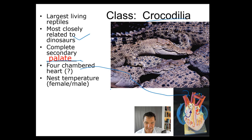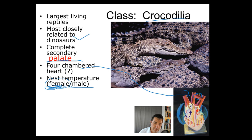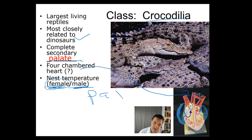Crocodiles also have temperature-dependent sex, very much like the lizards. When you have higher temperatures, you get males. Low temperatures will give you females, higher temperature gives you males. So they're like pattern two.